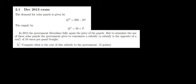Let's have a look at part three of this question. Suppose that the government liberalizes the price of the panels, but to stimulate the use of the panels, it gives consumers a subsidy — 10 euros per panel bought — meaning that for every panel the consumer wants to buy, the government gives him 10 euros, with the hope that he's going to buy even more.